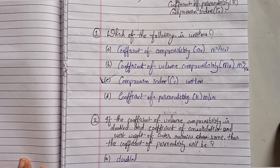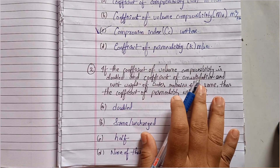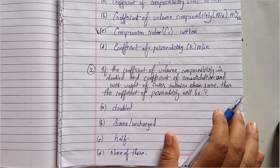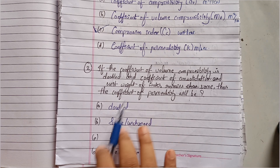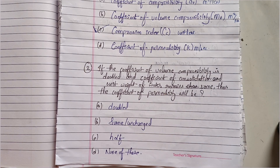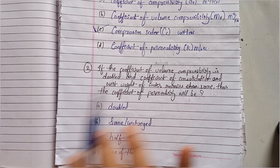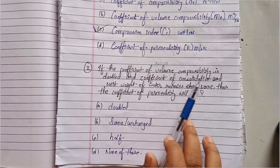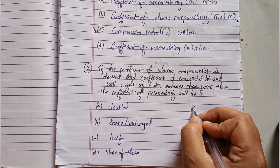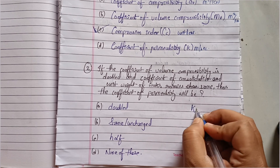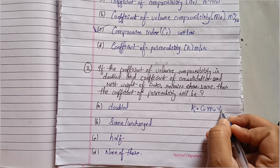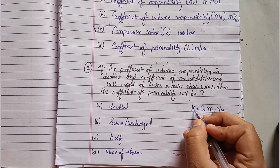Question two: if the coefficient of volume compressibility is doubled and the coefficient of consolidation and unit weight of water remain the same, then the coefficient of permeability will be? To solve this, you need to know the formula relating coefficient of permeability, coefficient of consolidation, coefficient of volume compressibility, and γw.